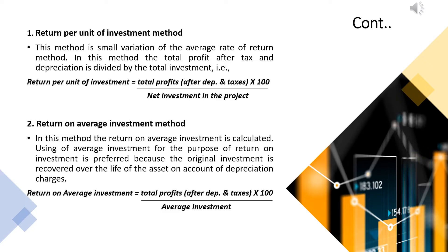In the return per unit of investment method, the total profit after tax and depreciation is divided by the total investment in the project. Total profit after depreciation is divided by the net investment in the project — that is the return per unit of investment method.